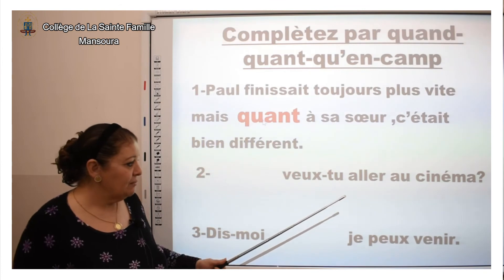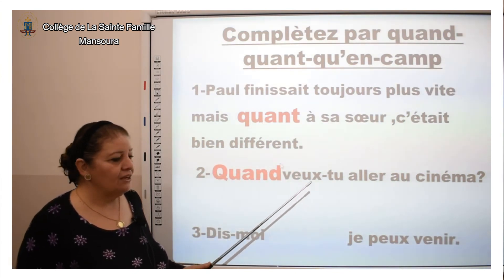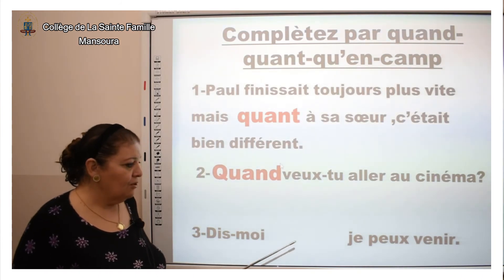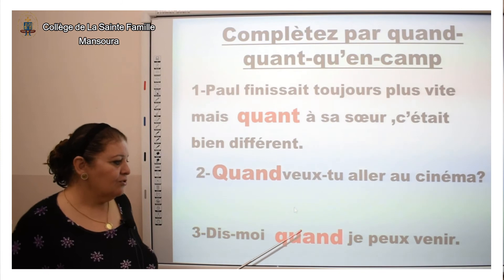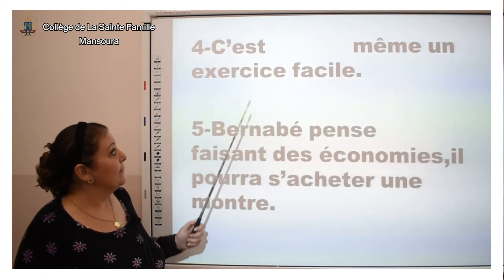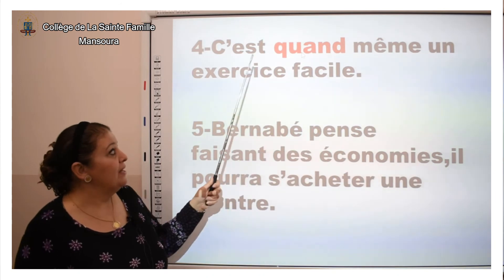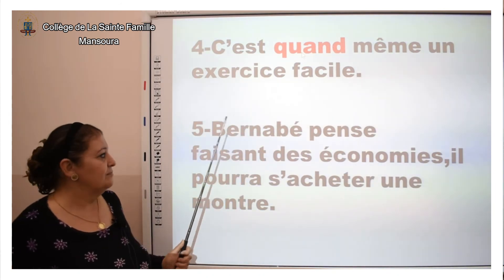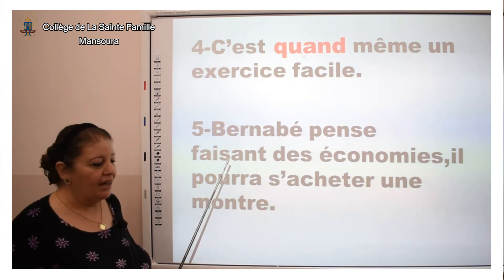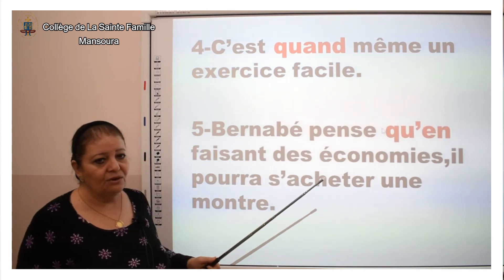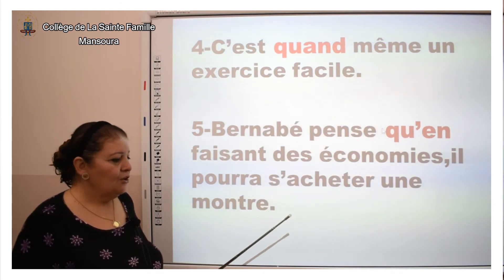« Veux-tu aller au cinéma ? » Ici, on va choisir « quand » — un mot interrogatif : « Quand veux-tu aller au cinéma ? » « Dis-moi quand je peux venir. » La même chose, « quand » avec D : c'est « quand » au sens de « lorsque » — quand je peux venir. « C'est quand même un exercice facile. » Quand il y a « même », on choisit « quand » avec D. « Bernabé pense qu'en faisant des économies, il pourra s'acheter une montre. » « Faisant » est un verbe qui se termine par -ANT, alors on choisit « qu'en » en deux mots.